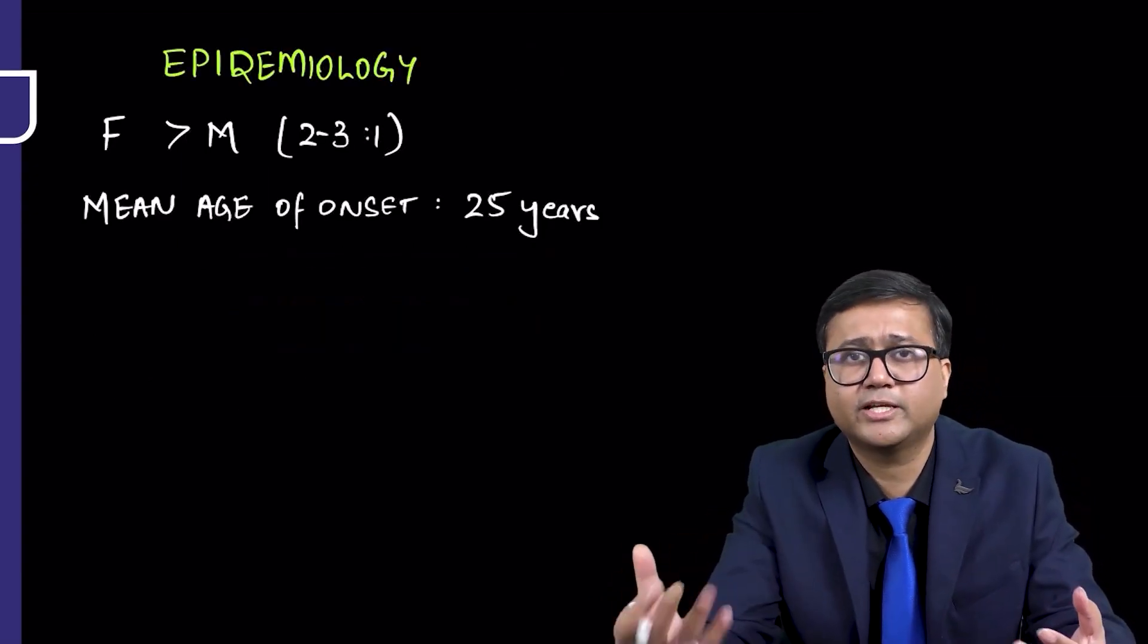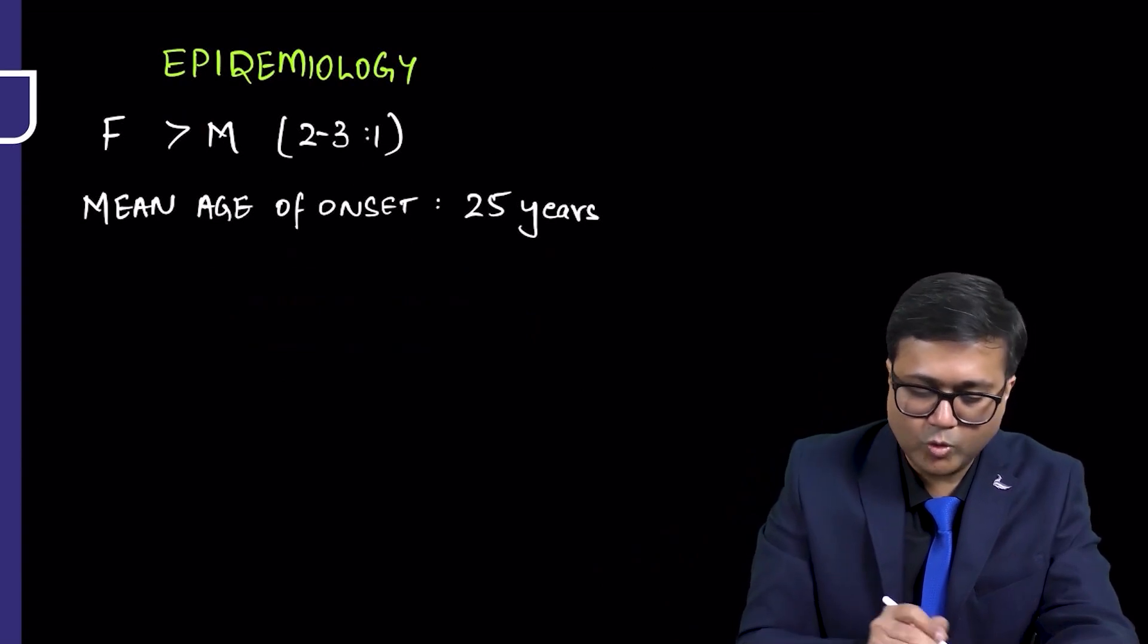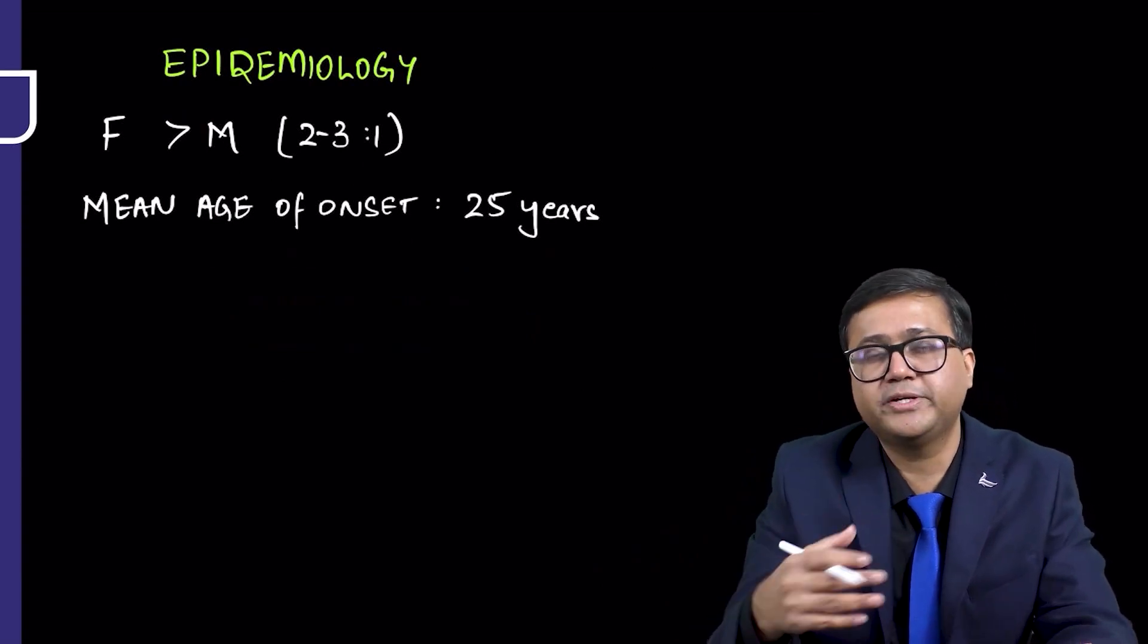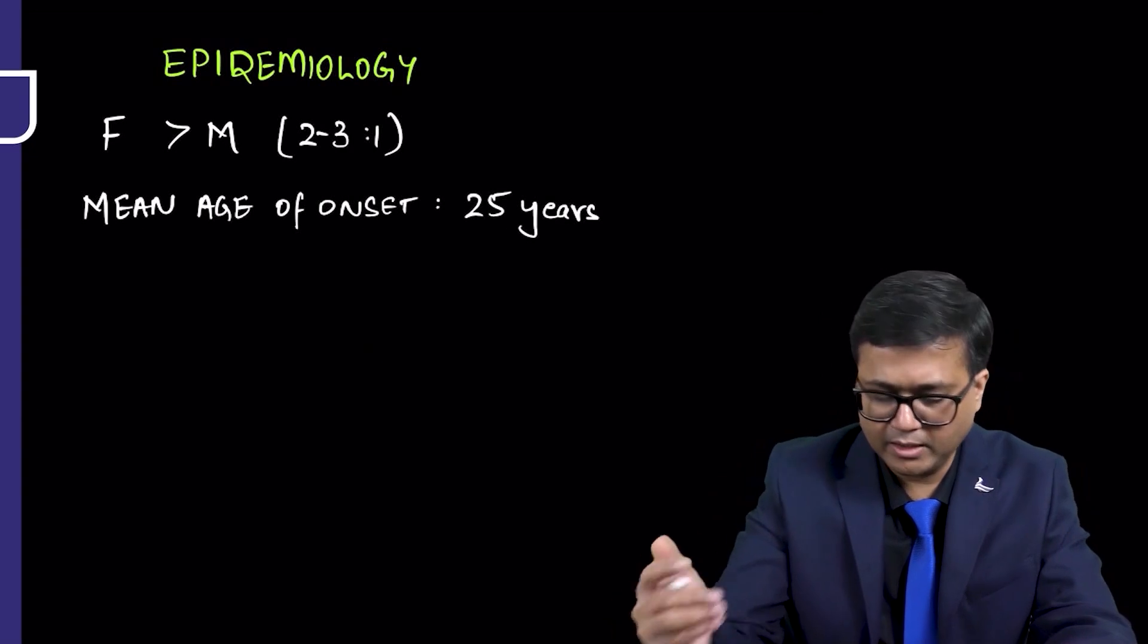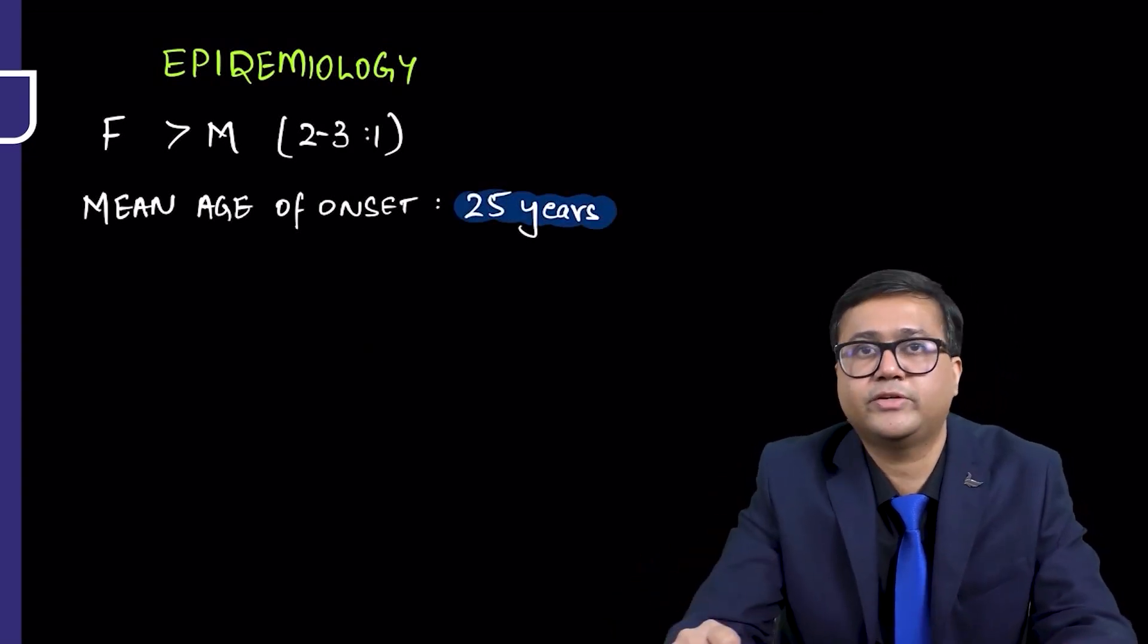When we talk about epidemiology, it is more in females than men, maybe two to three times more common in females than men. And the mean age of onset is around 25 years.